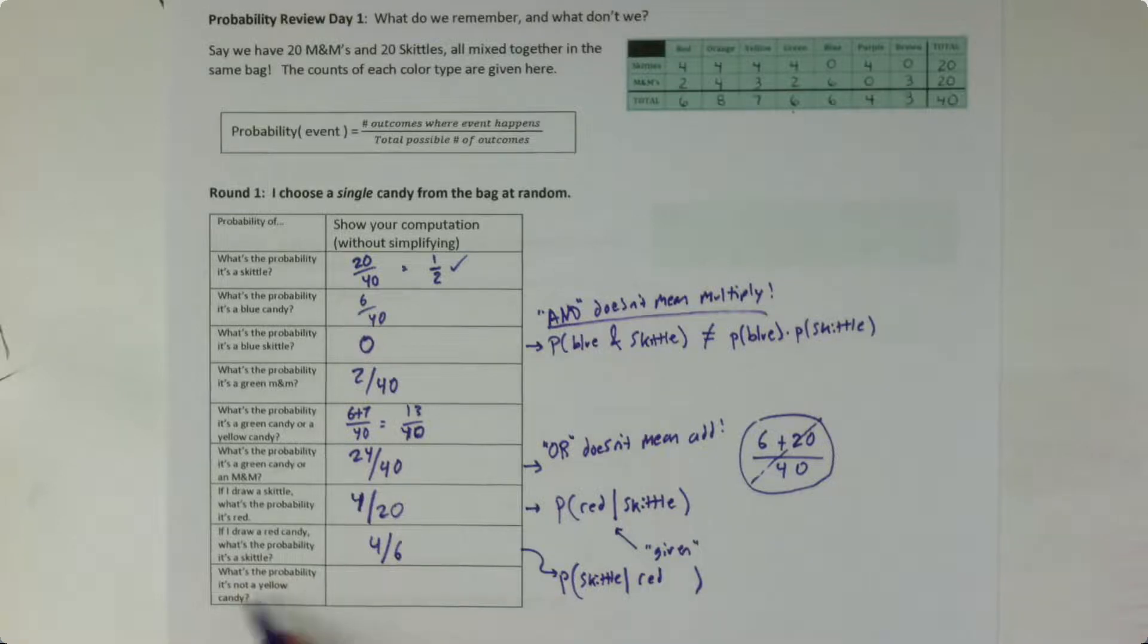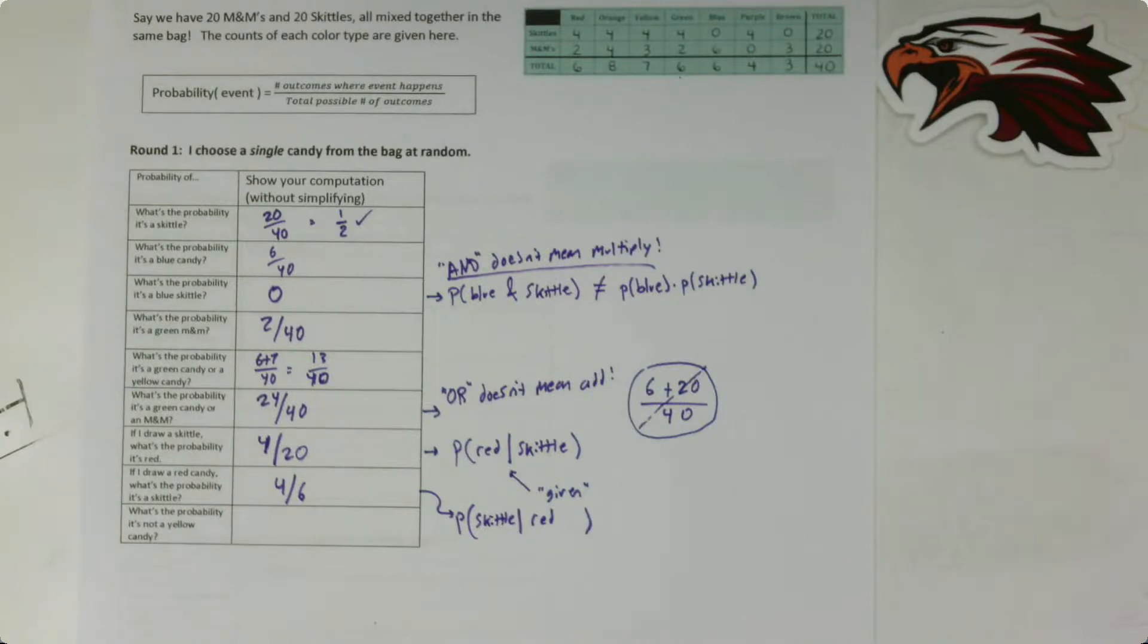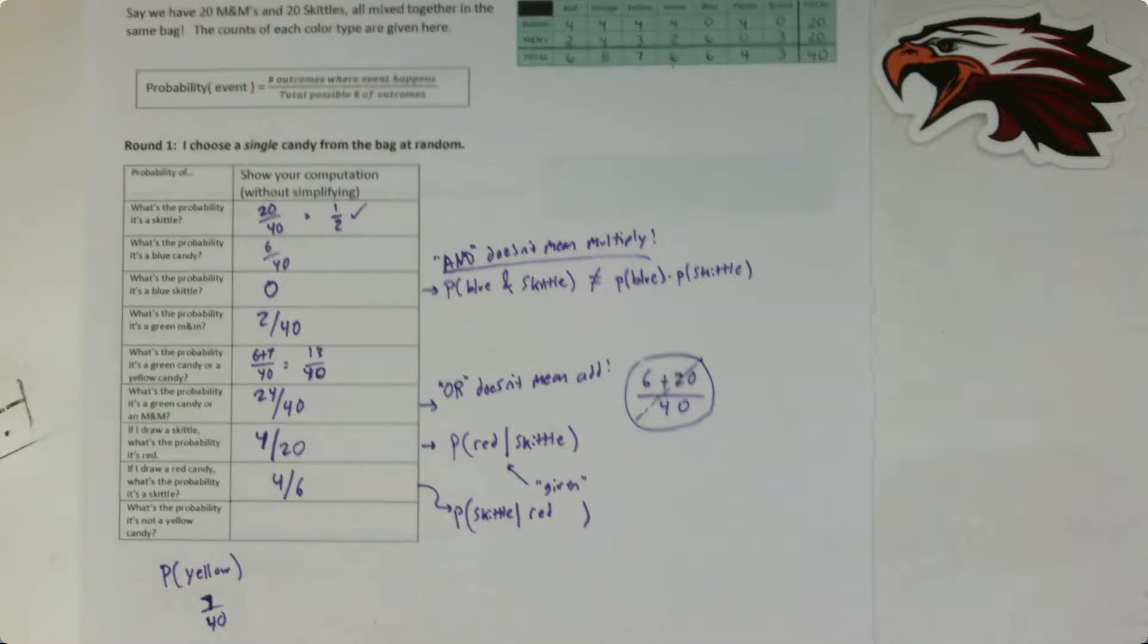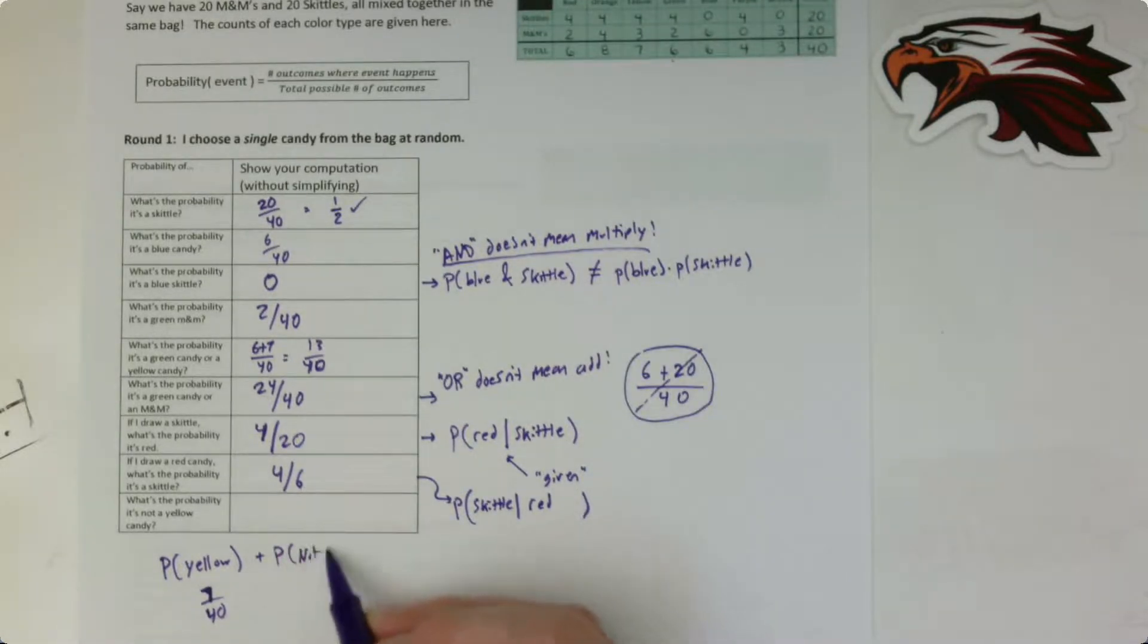Okay, finally, what's the probability that it's not a yellow candy? So let me make a quick observation here. The probability that we get a yellow candy is, what is it? How many yellows are there? There's 7 out of 40. Okay, what's the probability that it's not yellow? Well, that's the thing we're trying to figure out. But if I add up all the things that are yellow and all the things that are not yellow, that's just all the things. So I know that the probability of being yellow and the probability of being not yellow, when I combine those together, it should be 100% because one of those two things has to happen. So the probability of being yellow plus our mystery probability of being not yellow has to be 1.